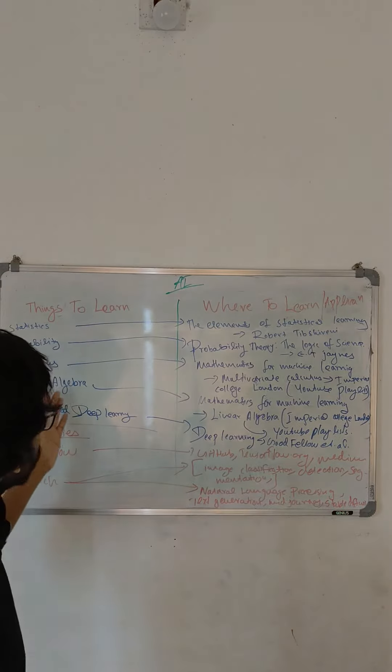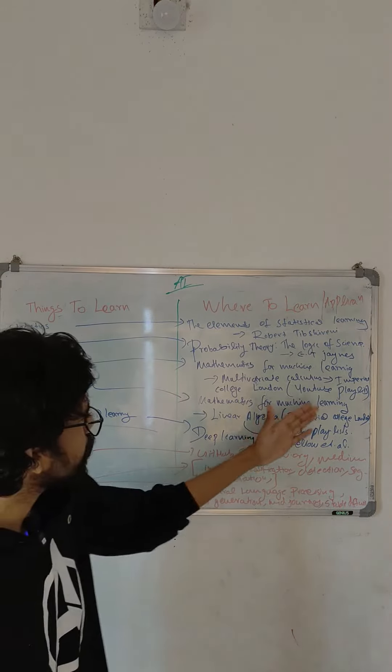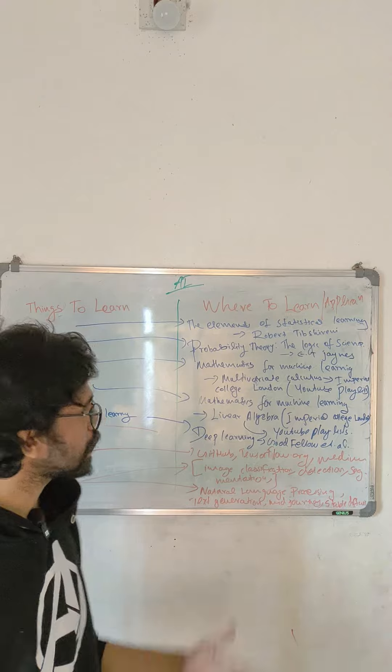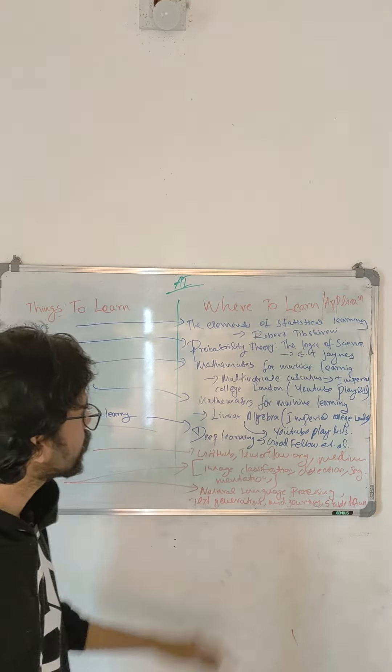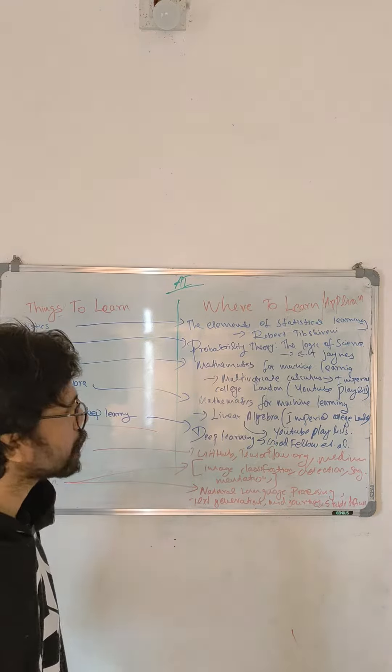We are going to learn about linear algebra. We are going to look at the YouTube Playlist from Imperial College - the Mathematics for Machine Learning. We are going to look at the Multivariate Calculus.